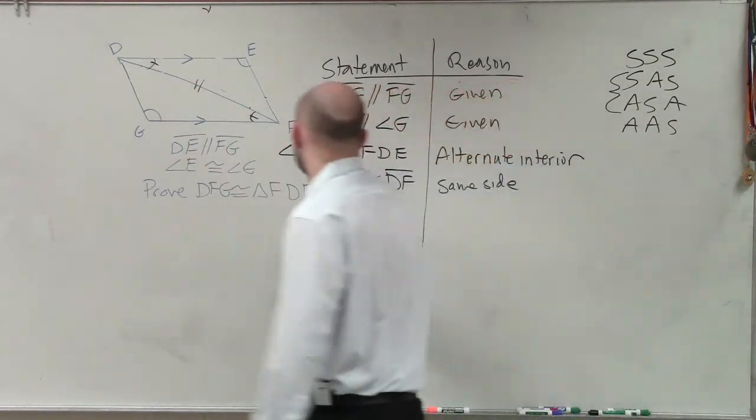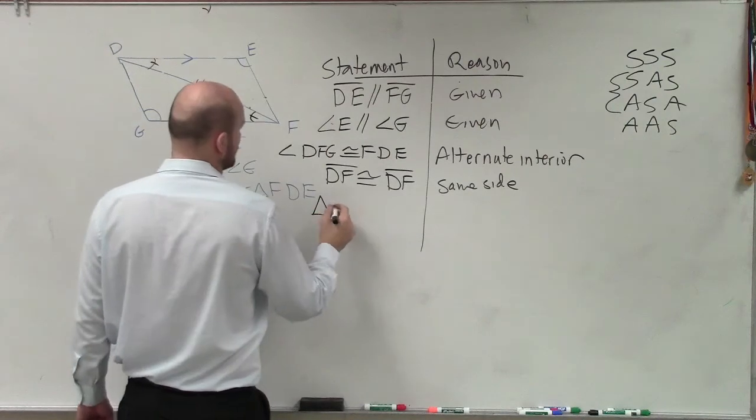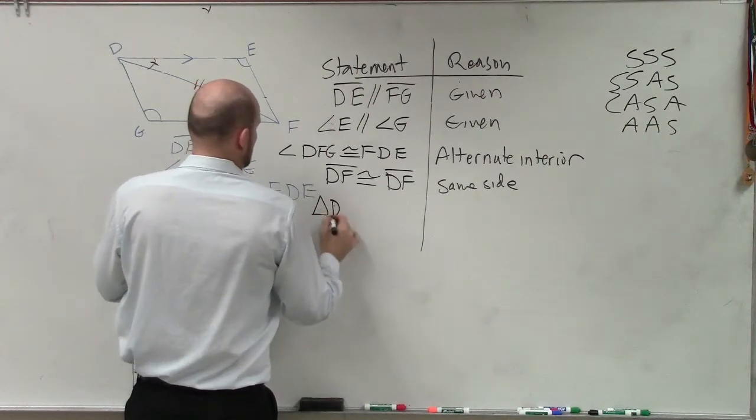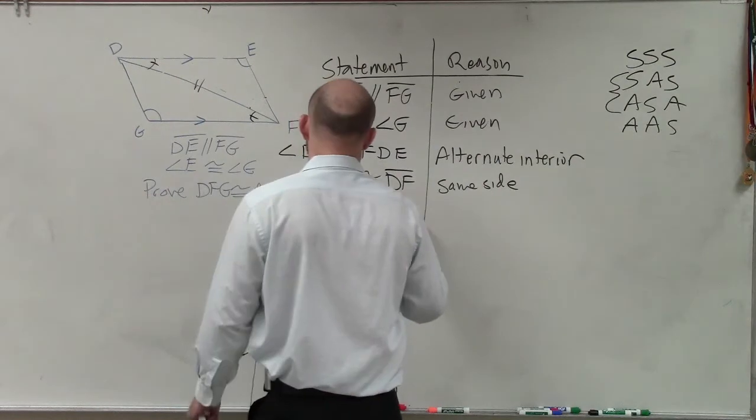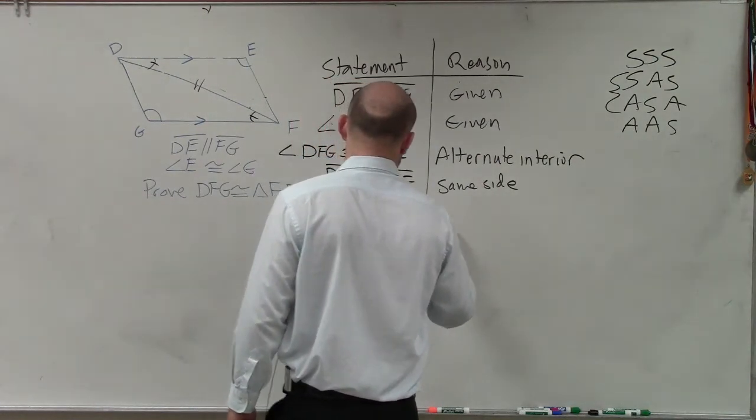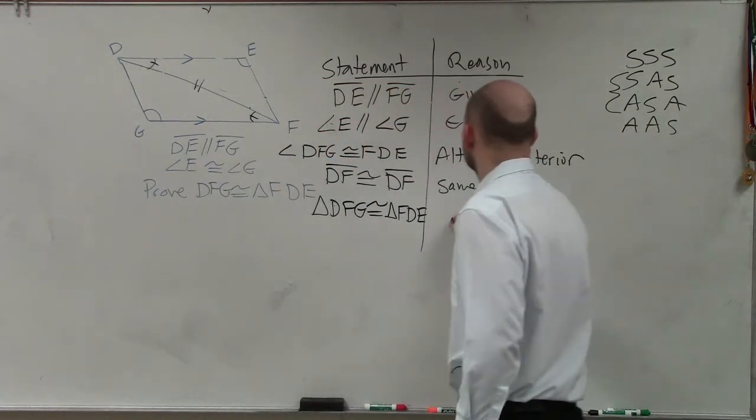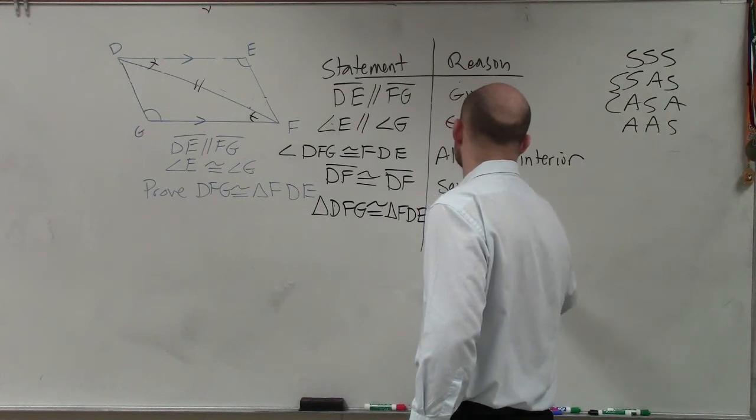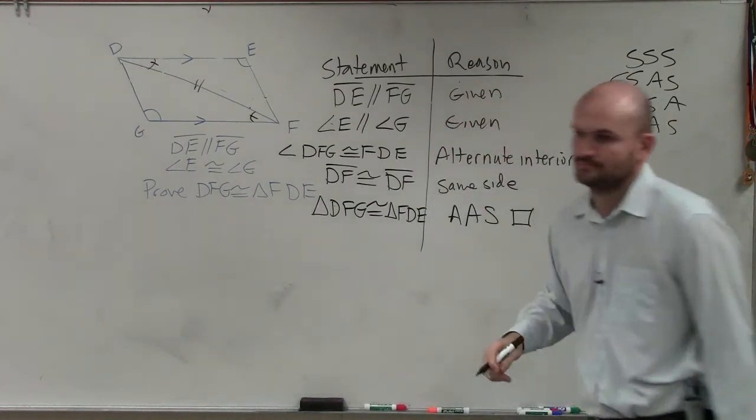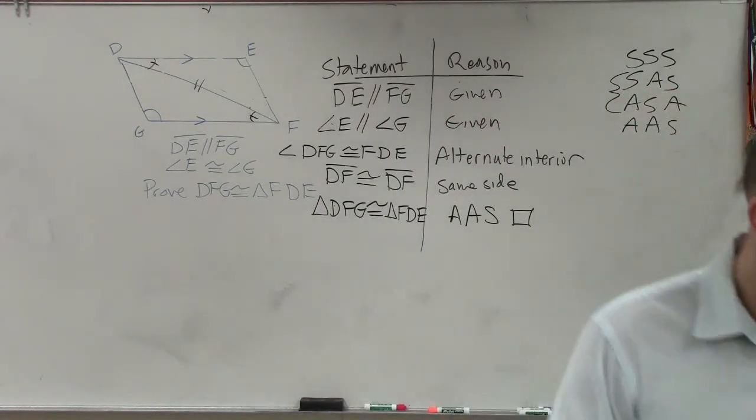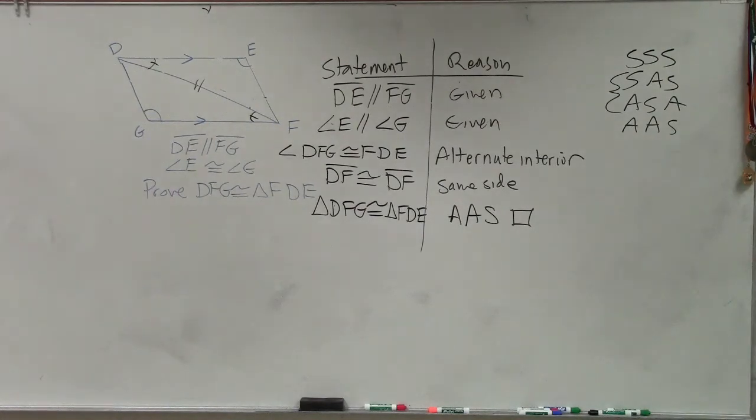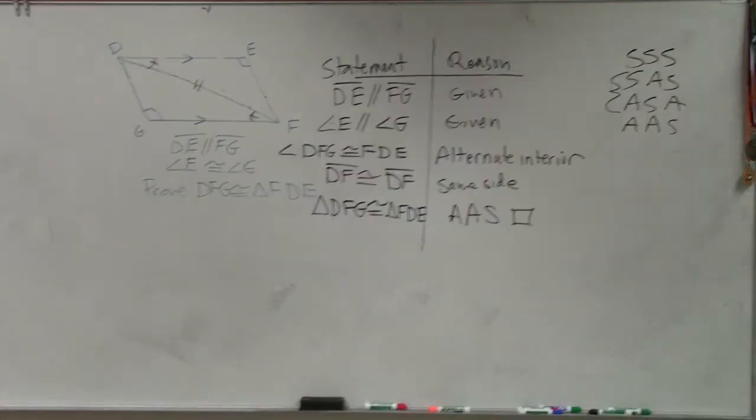So therefore, I can now write in my homework that triangle DFG is congruent to triangle FDE. Why are those two triangles congruent? Angle, angle, side. Okay, so now.